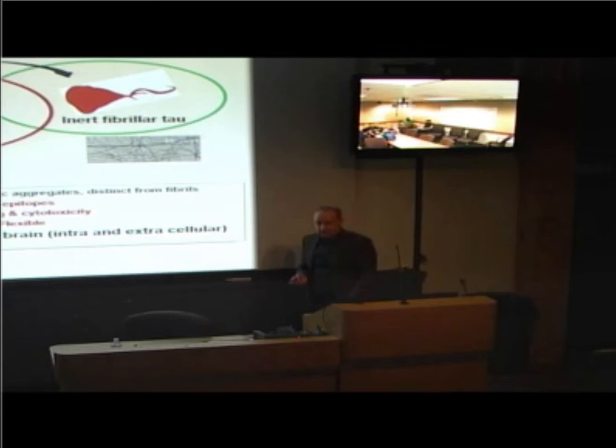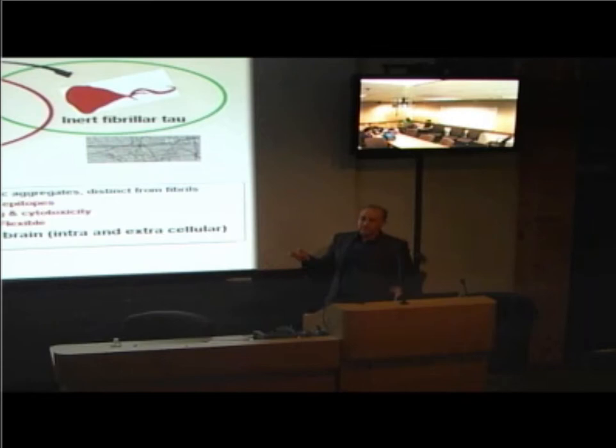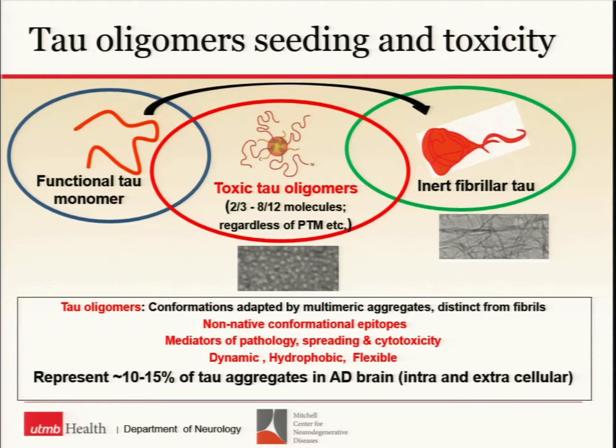When we analyzed 15 to 30 brain tissues, these oligomers don't represent a large portion of tau in the brain — at the higher limit, 10 to 15% of tau aggregates, not total tau. We found them both intra- and extracellular, but most of our experiments used PBS-soluble oligomers. We simply homogenize brain and take the PBS-soluble fraction.